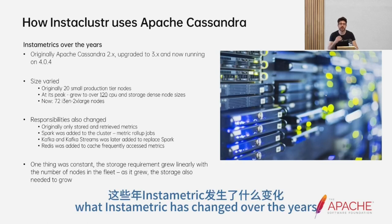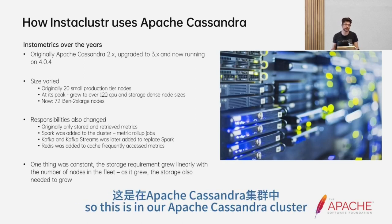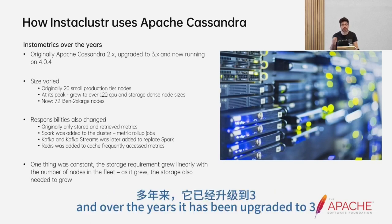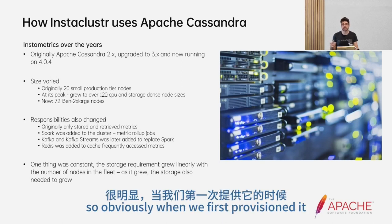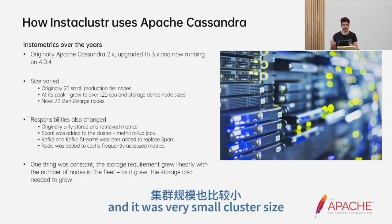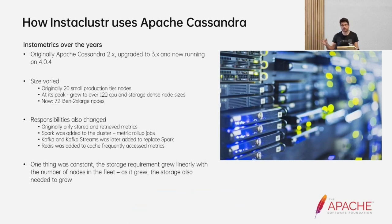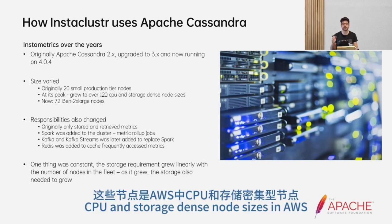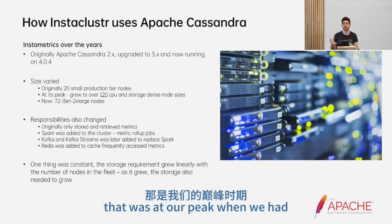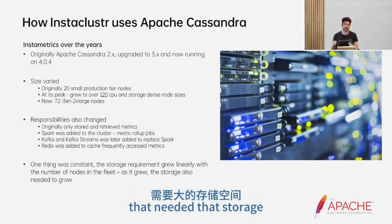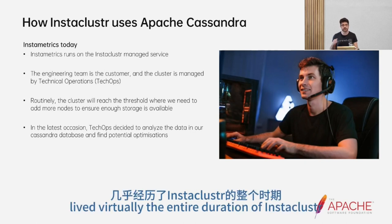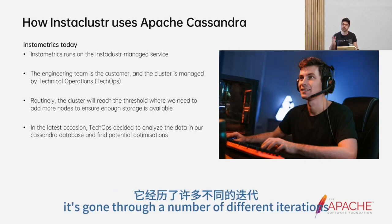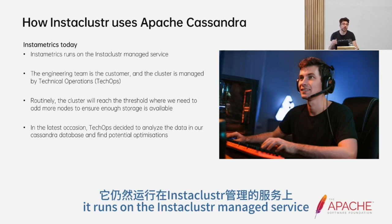Let's talk about how InstaMetrics has changed over the years. This is our Apache Cassandra cluster — it was originally provisioned in Apache Cassandra 2, has been upgraded to 3, and now it's running on 4. Over time the size has varied. When we first provisioned it we had very few clusters under management, and it was very small until it reached its peak about a year and a half ago, where it was over 120 CPU and storage dense node sizes in AWS. As of today, it's 72 nodes of i3e.2xlarge in AWS.